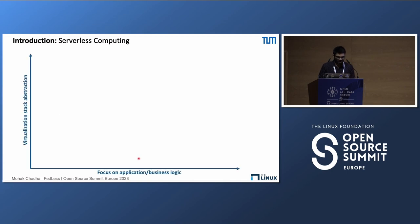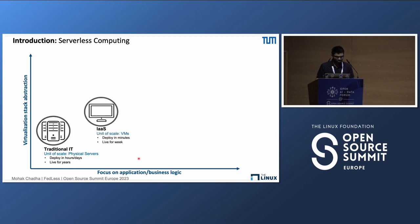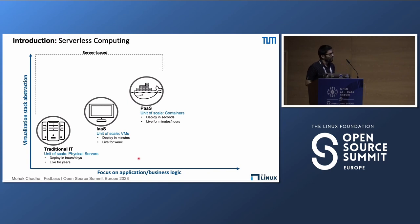If you look at a brief history of the cloud, the x-axis denotes focus on application or business logic, and the y-axis denotes the virtualization stack abstraction. In the beginning, there were traditional IT where the unit of scale was physical servers with the deployment model being bare metal servers. These usually lasted for years and could be deployed in hours or days.